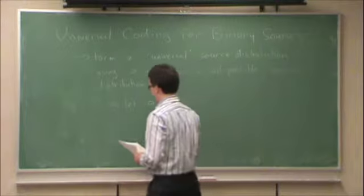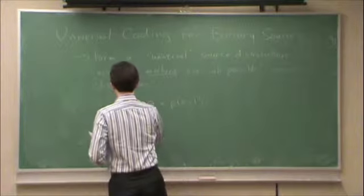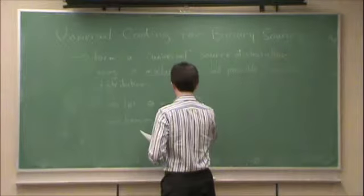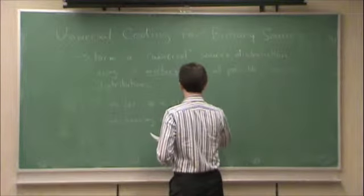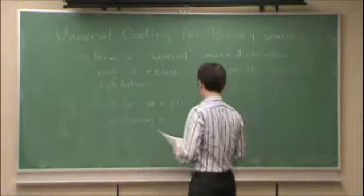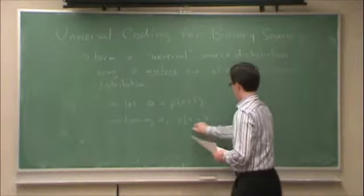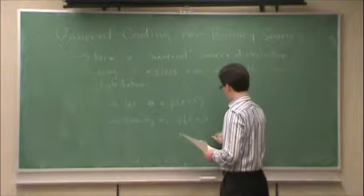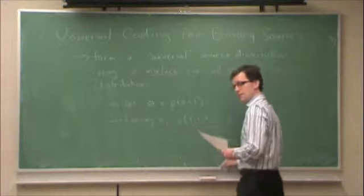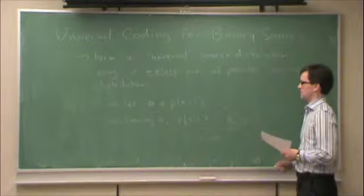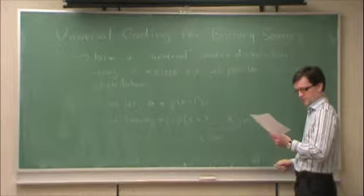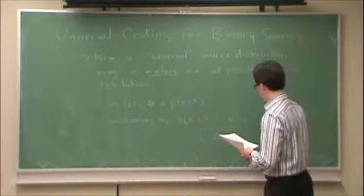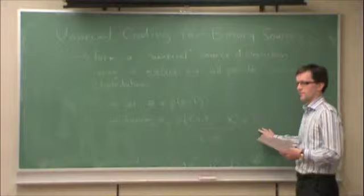So, if I knew theta, the probability of any sequence x1, x2, x3, and so on up to xn, where again I'm using the number k to represent the number of ones, this is what's called a Bernoulli source. If there's k ones in here, what's the probability of that?